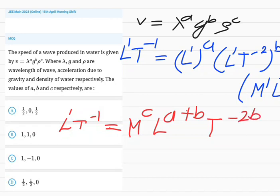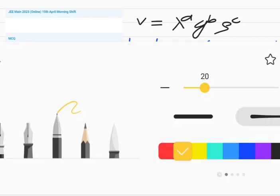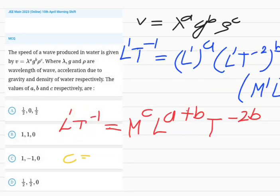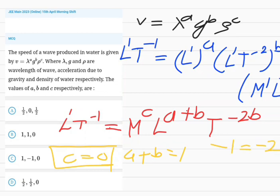Now compare the powers. By comparing the powers, C will come out to be 0. A plus B that will be 1. And comparing T's power, minus 1 equals minus 2B.